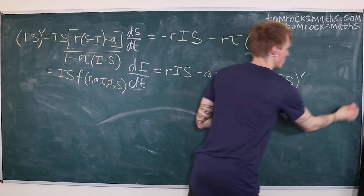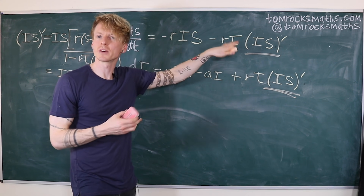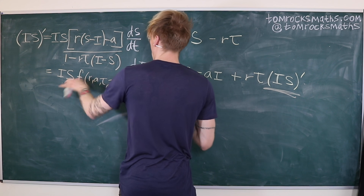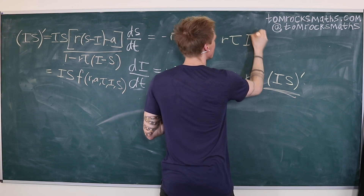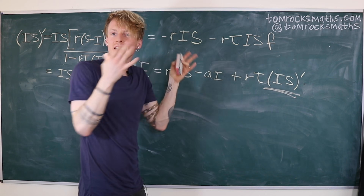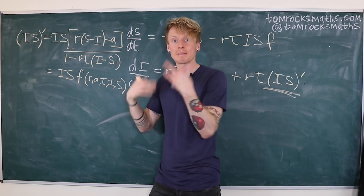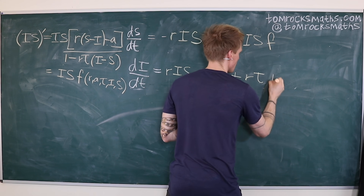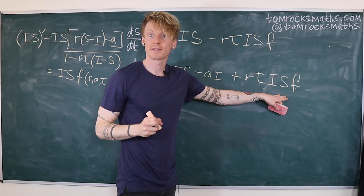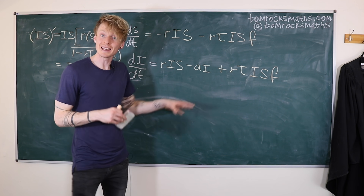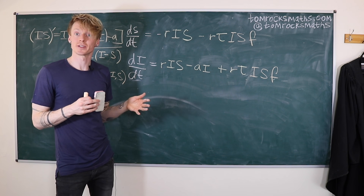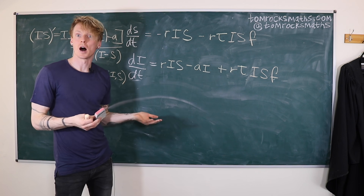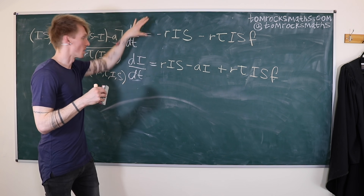We're going to neglect the order tau squared terms and substitute the IS' term with I·S·F in our full system. So this term becomes I·S·F in both equations. You may also have noticed that I've removed the dR/dt equation because it is now decoupled from the S and I equations — it was only in terms of I. So if we can solve for I and S, then we can solve for R. We'll ignore that equation for now and proceed with the first two.